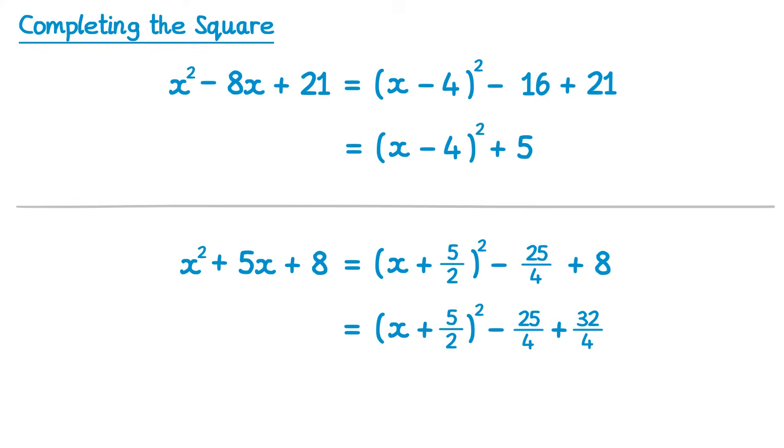Finally, we can now simplify. So when you come to simplify these two fractions here, I'd advise you just look at the numerators. So we've got negative 25, and then add 32, which gives 7. A positive 7, so this is plus 7 over 4.